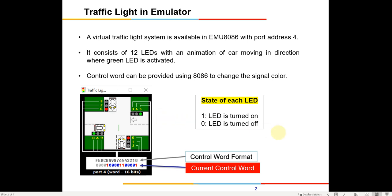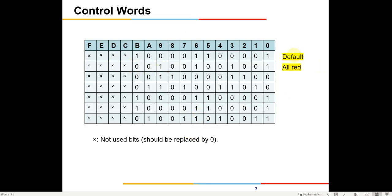You give the control word to output port number four so the lights will glow. This is how it works in the 8086 emulator — you just have to give the control word so that the required bulbs glow. The first default condition starts with all red. There are five sets of different conditions already specified in the emulator, but you are also free to use your own conditions.